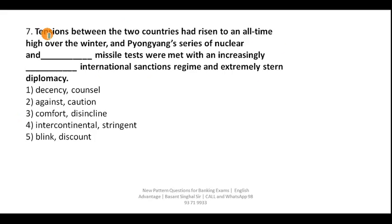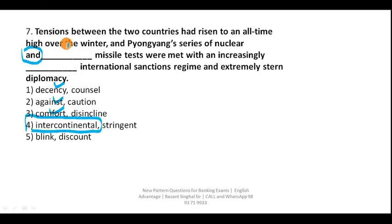Question seven: 'Tension between the two countries had risen to an all-time high over the winter and Pyongyang's series of nuclear and ___ missile tests.' The keyword is 'nuclear' — the missile type must pair with nuclear. Options like decency, against, or comfort cannot describe a missile type, but 'intercontinental' can. So your correct answer is intercontinental. If the first option is correct, the second option will automatically be correct.